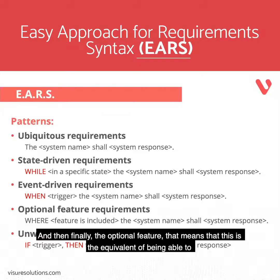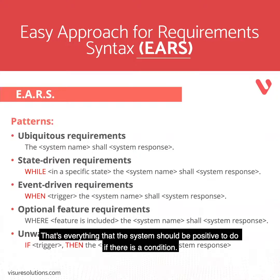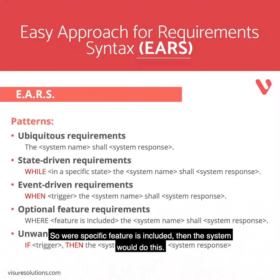And then finally, the optional feature — that means this is the equivalent of 'be able to'. That's everything that the system should be possible to do if there is a condition. So where a specific feature is included, then the system will do this.